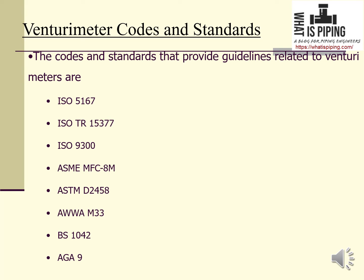The codes and standards that provide guidelines related to venturimeter design, installation, or maintenance include: ISO 5167, ISO TR15377, ISO 9300, ASME MFC-8M, ASTM D2458, AWWA M33, BS1042, and AGA 9. All these codes provide guidelines related to design, installation, maintenance, or construction of venturimeters.